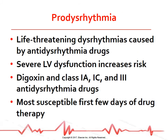Anti-dysrhythmia drugs can cause life-threatening dysrhythmias similar to those for which they are given — a concept termed pro-dysrhythmia. Patients who have severe left ventricular dysfunction are the most susceptible. Digoxin and Class 1A, 1C, and Class 3 dysrhythmia drugs can cause these reactions. The first several days of drug therapy are the vulnerable period for developing pro-dysrhythmias. For this reason, many oral anti-dysrhythmia drug regimens are started in a monitored hospital setting.